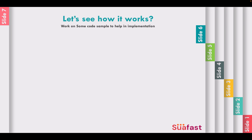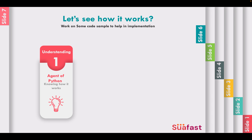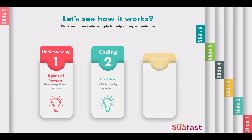Now that you understand the basic elements, you need to become what I call an agent of Python — you need to understand how it works. Learn the things required in Python like libraries and packages, how to import them and work with them. Work on code samples to implement those ideas and cement them in your mind so you fully understand how it works.